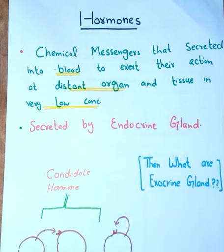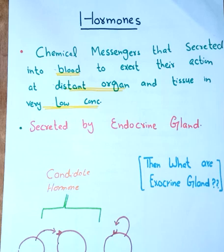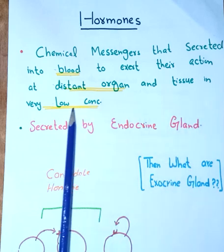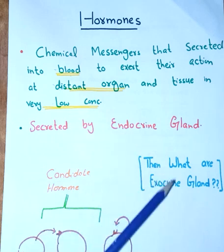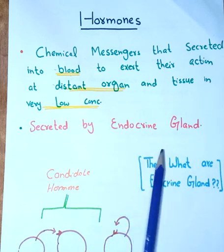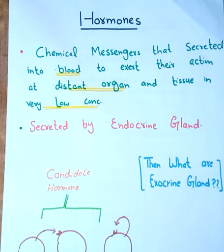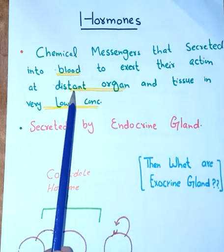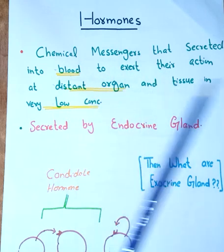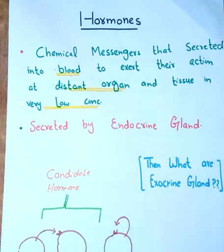These hormones must be secreted into blood by some endocrine gland, they must produce their action at the distant organ or tissue, and they should exert their effect at a very low concentration. After secretion from the epithelial cells of endocrine glands, there are two types of glands: endocrine and exocrine. Endocrine glands secrete their secretion directly into the blood, and those secretions are basically hormones, transported through blood to the distant organ or tissue.